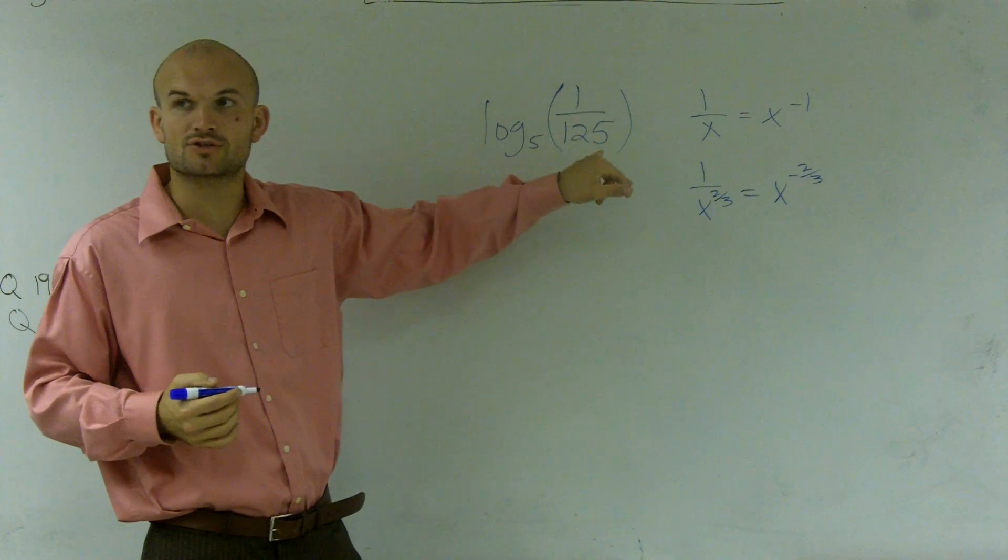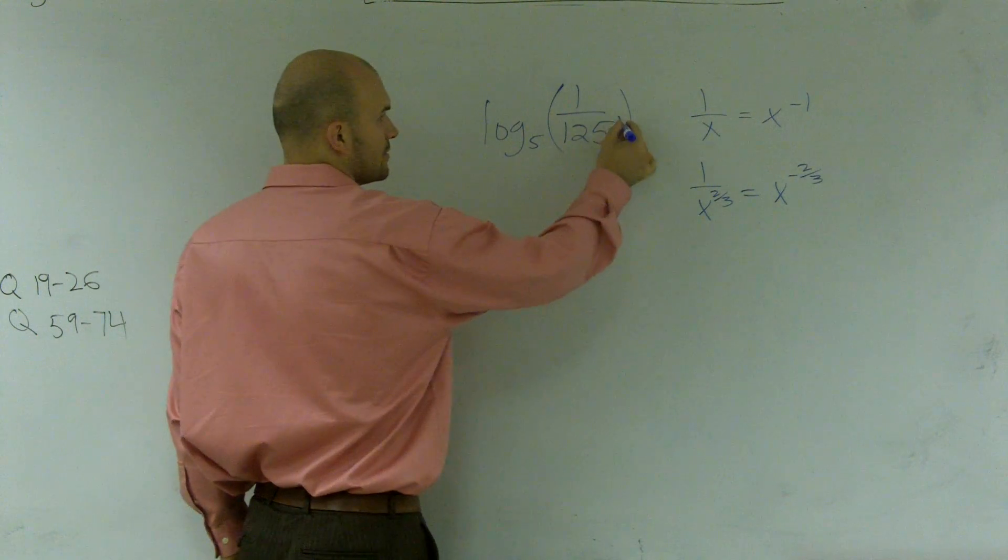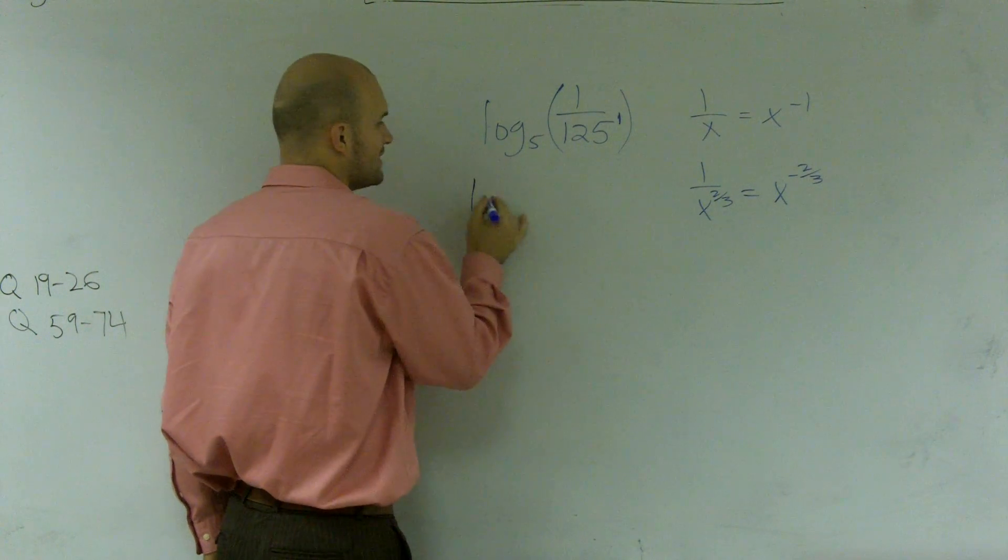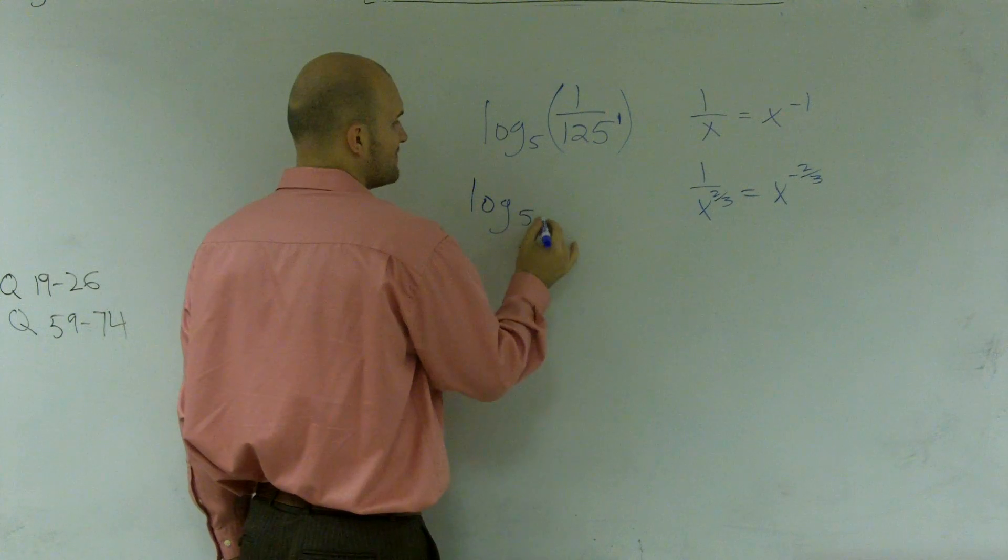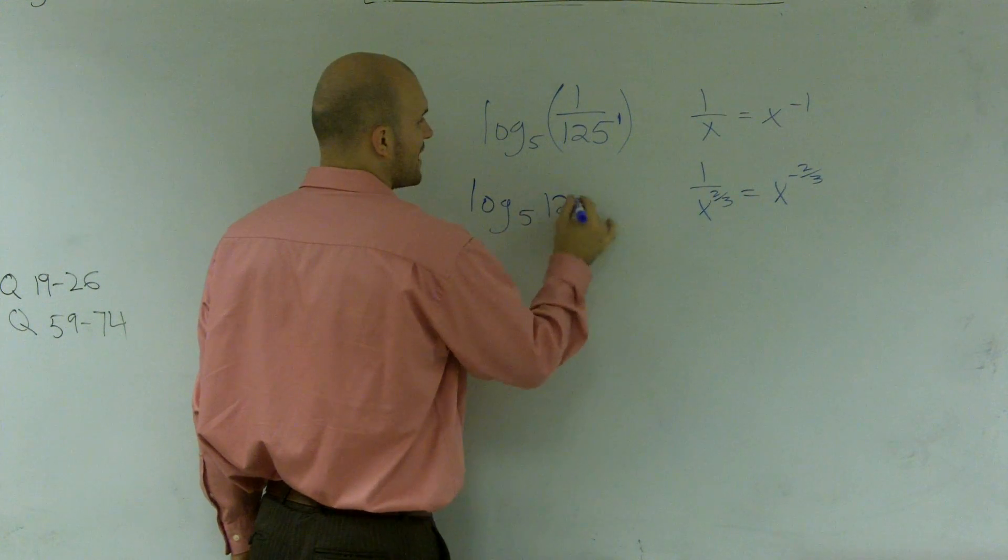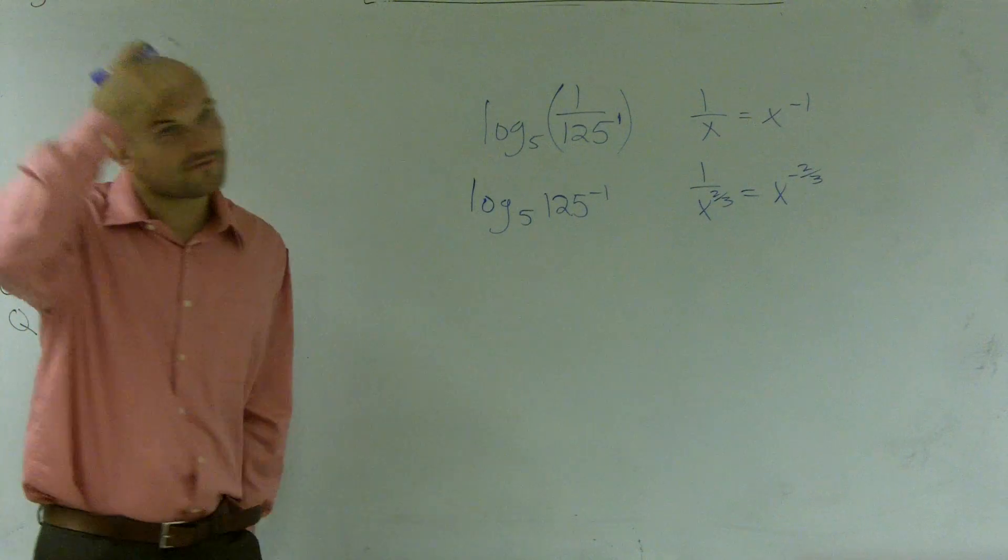So if I have 1 over 125, 125 is raised to the first power. So I can rewrite this now as log base 5 of 125 raised to the negative first power.